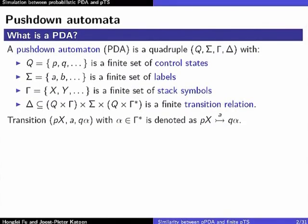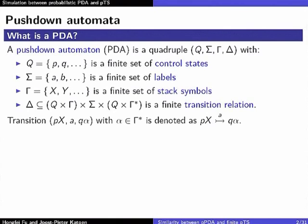A pushdown automaton has a finite set of control states, a bunch of labels attached to transitions, a finite set of stack symbols, and a transition relation. The notation I use is: you go from control state P with stack symbol X, then you read the next symbol A, and you go to a configuration which is a control state Q and stack content alpha.